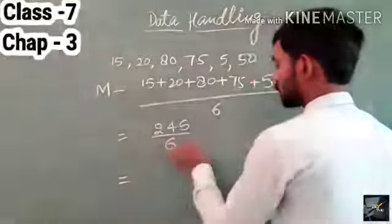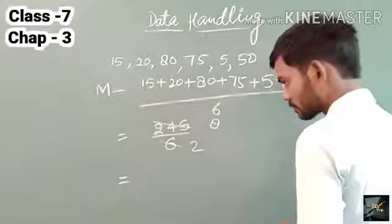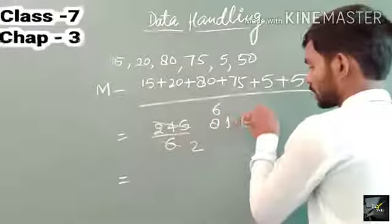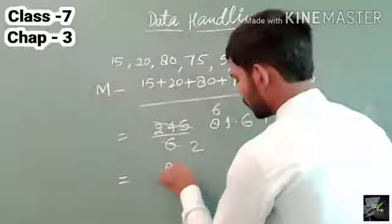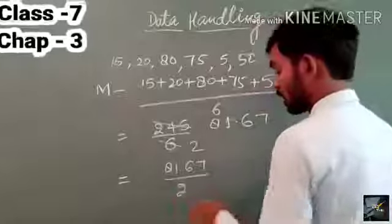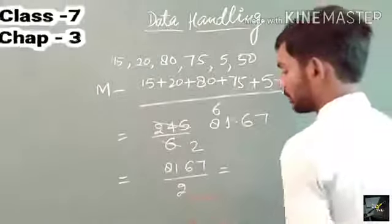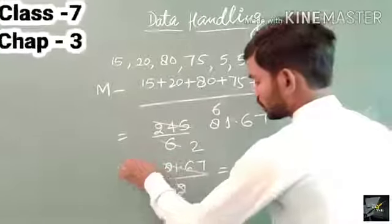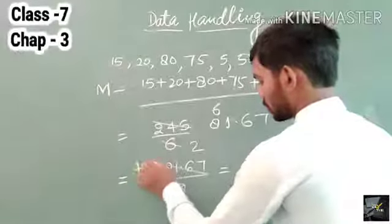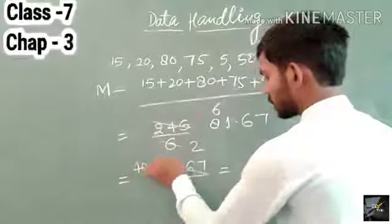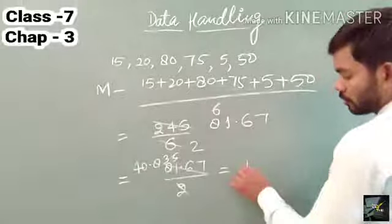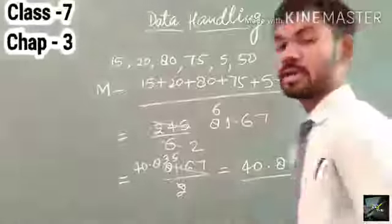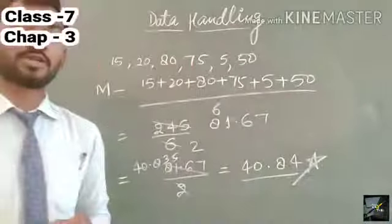Now we solve 245 divided by 6. Performing the long division, we get 40.84. Therefore 40.84 is the required mean of the given data.